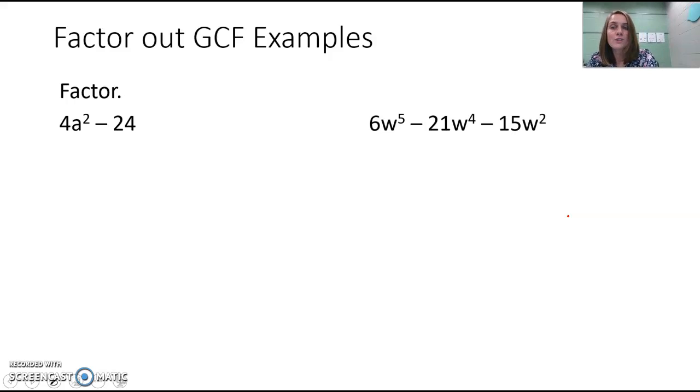We look at our two terms that we have here and we want to figure out what is our greatest common factor. So I would start with our coefficients, the numbers 4 and 24. Go through the list. What's the factors of your smaller number? That might be easier.